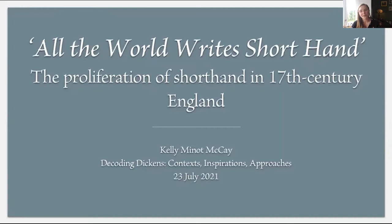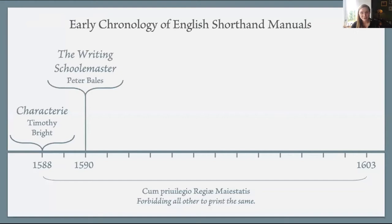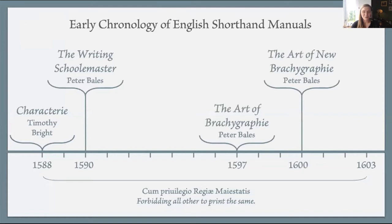Many who couldn't write shorthand were nonetheless aware of its presence and of the special qualities and advantages it was invented to provide. In the first century of its history, those advantages didn't just come down to speed — the ability to take down live dictation. They also included secrecy, spatial efficiency, and to a slightly lesser extent, universality. Those features were big selling points of shorthand right from the start, and were actually marketed even before a workable shorthand system had been invented.